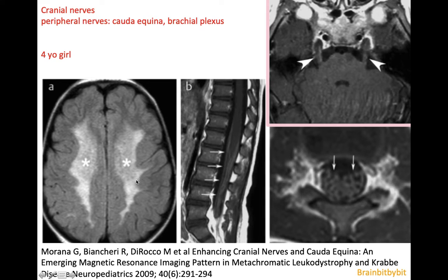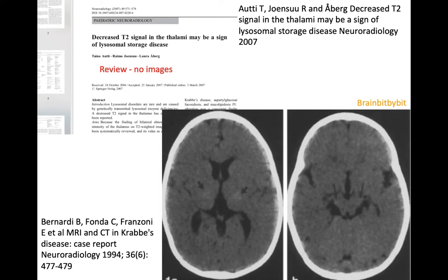In Krabbe's disease there is white matter involvement due to the oligodendrocyte problem, and peripheral nerve involvement due to the Schwann cell problem. You might see enhancement of the cauda equina and thickening of the cauda equina fibers in this four-year-old girl, as well as enhancement and thickening of the cranial nerves. This is the fifth cranial nerve — you can see it's thickened and enhances. There may also be optic nerve involvement or involvement of the brachial plexus.